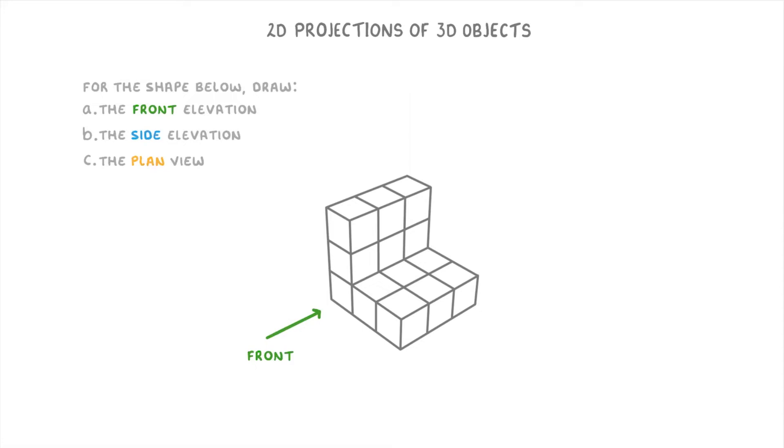Notice though that this time the front view is labelled as this side, and they'll always do this in the exam so that you know which side is which. We can then figure out that this side must be the side view, and as always this view from above will be the plan.